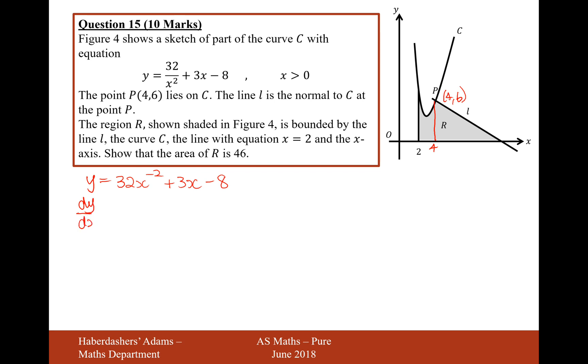So dy by dx equals times the power to the front, decrease the power by 1, times the power to the front, decrease the power by 1, minus the 8. Let's now plug in x equals 4 to work out what the gradient is. 4 to the power of 3 is 64, minus 1 plus 3 equals 2. Therefore, the gradient of line L is minus 1 half.